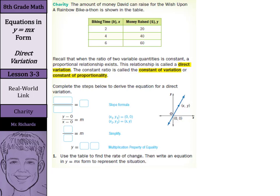Recall that when the ratio of two variable quantities is constant, a proportional relationship exists. This relationship is called a direct variation. The constant ratio is called the constant of variation, or constant of proportionality.